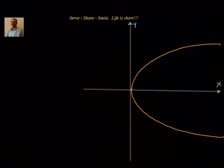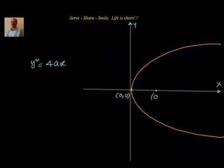We know that the equation of this parabola is y² = 4ax, where vertex is at (0, 0) and the focus is at (a, 0).